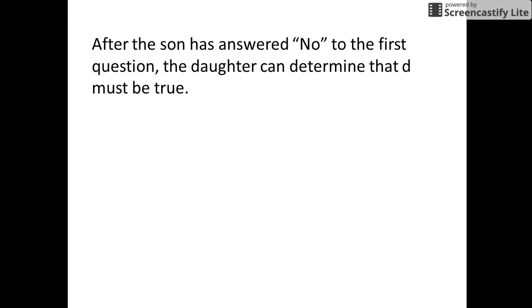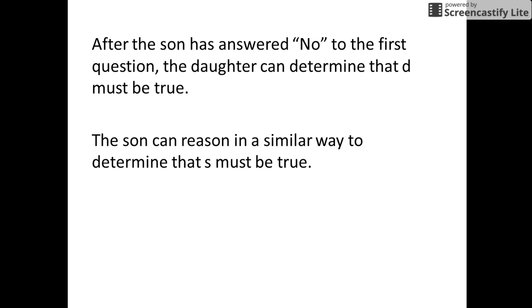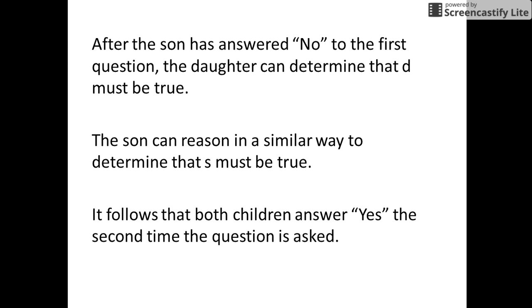But after the son has answered no to the first question, the daughter can determine that D must be true — that is, the daughter definitely has a muddy forehead. Similarly, the son can also realize that he himself must have a muddy forehead. So when the mother asks the question for the second time, both children answer yes — both of them have a muddy forehead.